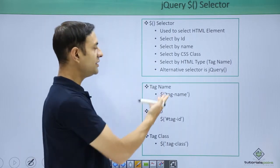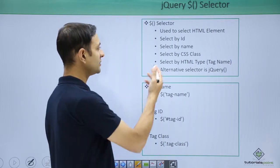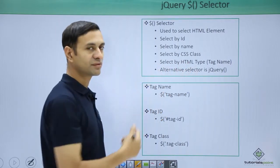You can select by ID, ID of the HTML elements. You can select by name, you can select by CSS class, you can select by HTML type as that.